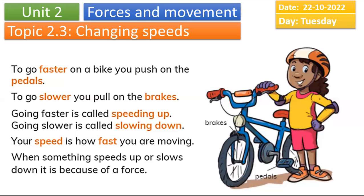Today we're going to look at how you can make things move faster and how you can make things stop or go slower. For example, to make a bicycle faster, push the pedals harder and your bicycle will move very fast. But if you pull the brake from the handlebar, your bicycle will slow down.